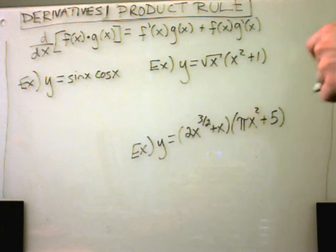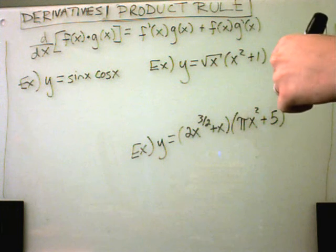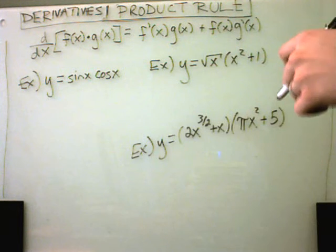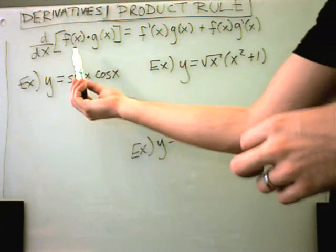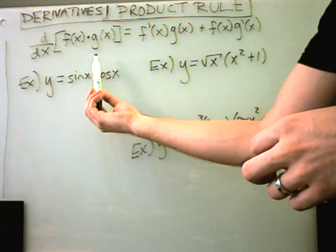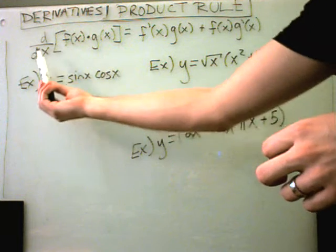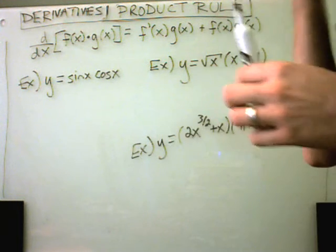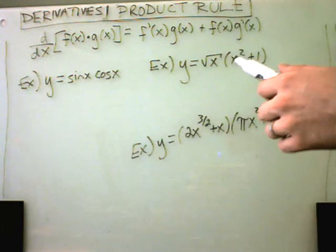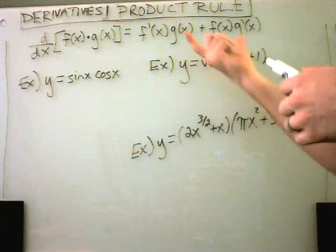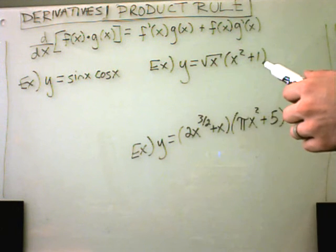So in this section we're going to talk about the product rule. Obviously the product rule applies when taking derivatives. Basically what the product rule says is, well you have two things that are being multiplied together. We want to take the derivative of that. It would be nice if it was simply the derivative of one multiplied by the derivative of the other, but as you can see by the formula over here it doesn't quite work out that simple.